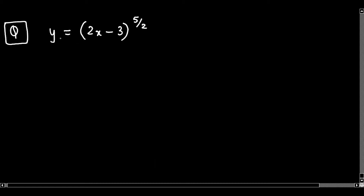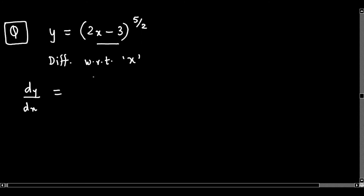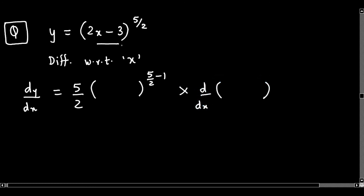Now let's see the next question. y equals 2x minus 3 raised to 5 by 2. This is also of the form f(x) raised to n. Differentiating with respect to x, we get dy/dx. The derivative of f(x) raised to n is n times f(x) raised to n minus 1 into the derivative of f(x). Here f(x) is 2x minus 3, so we write that down.